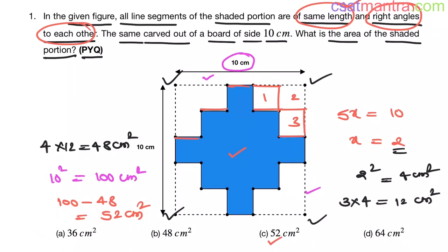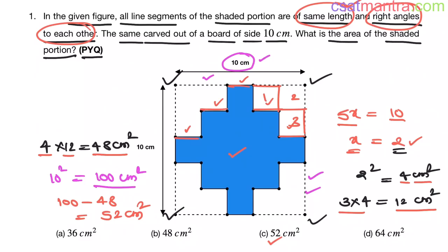To recap: the total length is 10 centimeters, so 5x equals 10, giving x equals 2. We have 3 squares in each corner; 1 square area is 4 centimeter square, so 3 squares give 12 centimeter square. With 4 such corners, 4 into 12 equals 48 centimeter square. The outer dotted square area is 100 centimeter square, so the shaded portion is 100 minus 48, equal to 52 centimeter square. Clear!